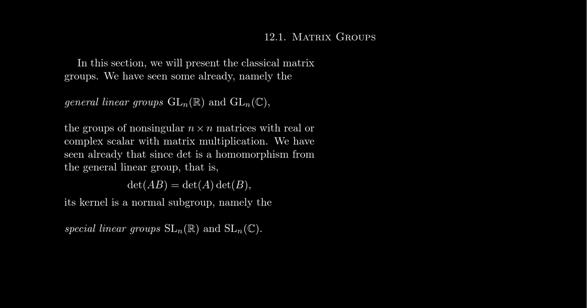When we study simple finite groups, we've seen a few already in this lecture series. Cyclic groups of prime order are finite simple groups. The alternating group, as long as the degree is five or bigger, is a finite simple group. And it turns out, with the exception of 27 so-called sporadic groups, every other finite simple group is a so-called group of Lie type. I want to give a little explanation of what that means.